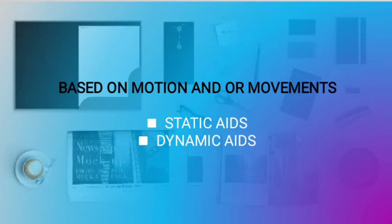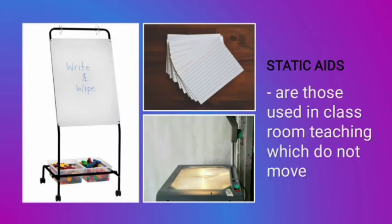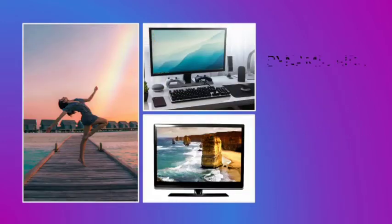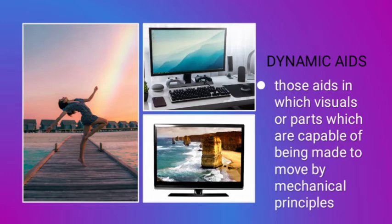Let's proceed to the classification based on motion or movement. There are static aids and dynamic aids. Static aids are those in classroom teaching which do not move — examples are charts, flashcards, and OHP. Dynamic aids are those in which parts are capable of being made to move by mechanical principles — examples are motion pictures, television, and computers.